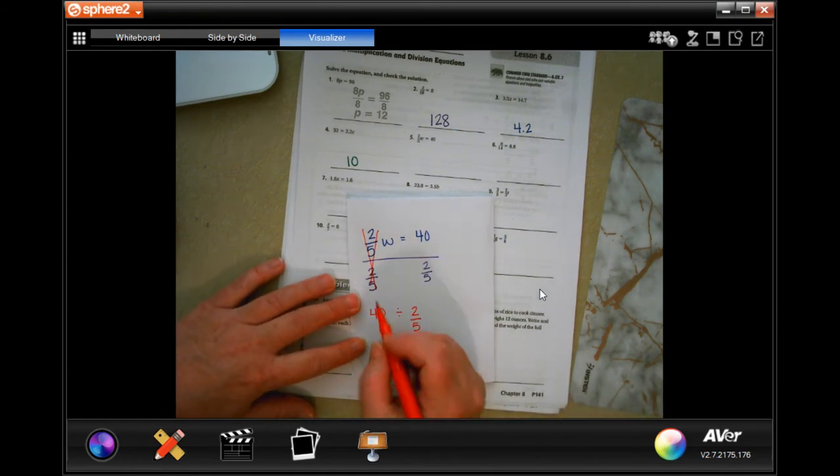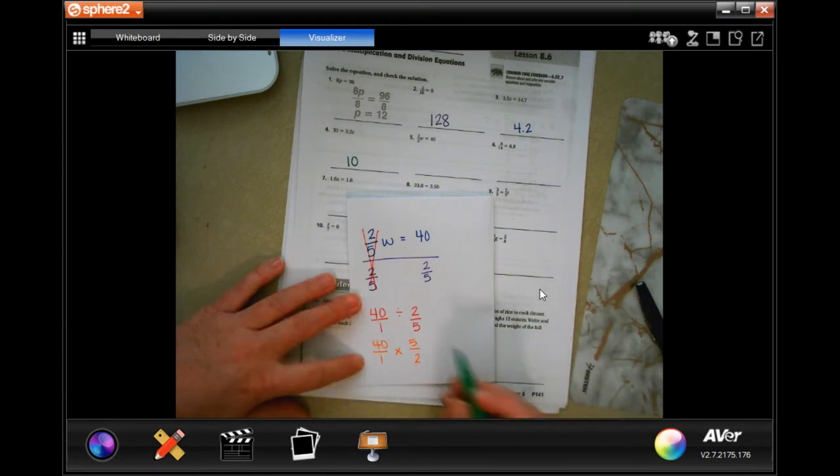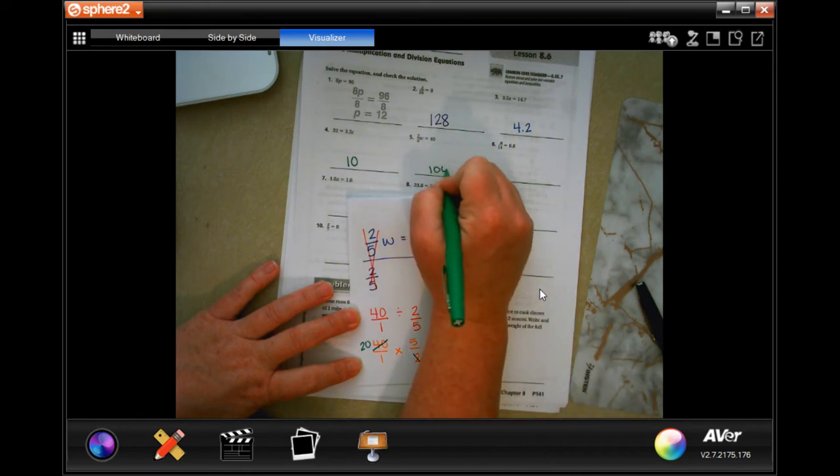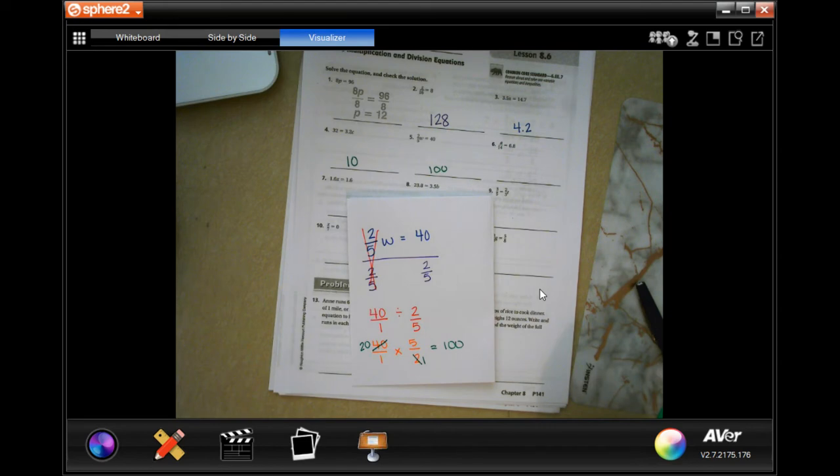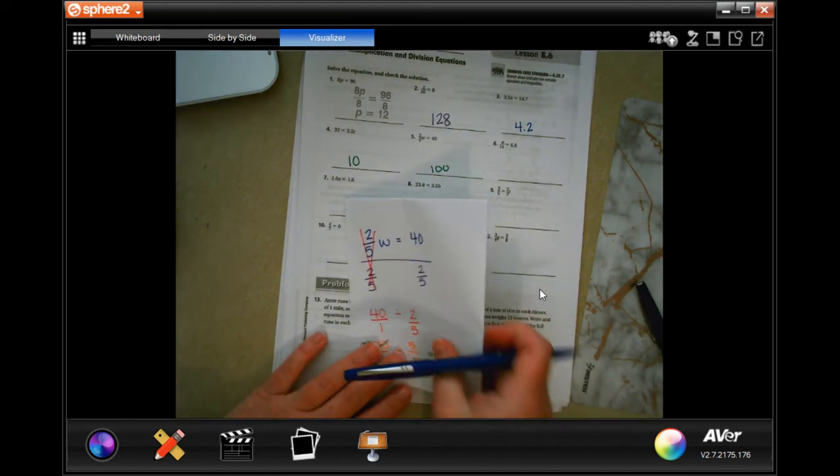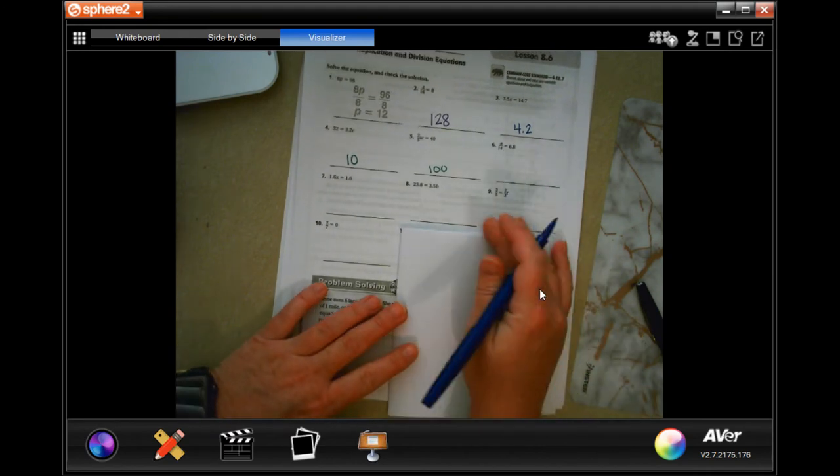Then, these two fifths cancel out and then I have 40 divided by 2 fifths. Well, let's put the 40 over a 1 because we need it to have a fraction, right? Then, we're going to keep, change, and flip. So, now, I can cross-cancel. 2 is going to go into 2 once, and 2 is going to go into 40 twenty times. And 20 times 5 is 100. Done.